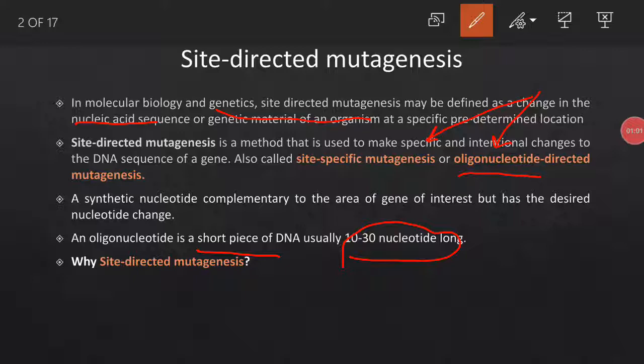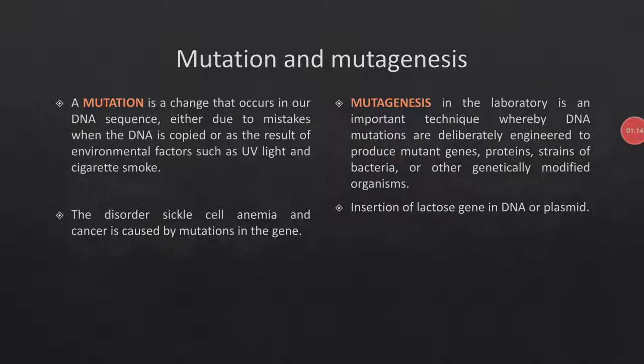There are two terms — mutagenesis and mutation — that people think are the same, but there is a slight difference. Mutation is a naturally occurring phenomenon due to mistakes when DNA is being copied, or due to environmental factors like UV radiation and cigarette smoke. For example, sickle cell anemia is caused by a mutation in a gene.